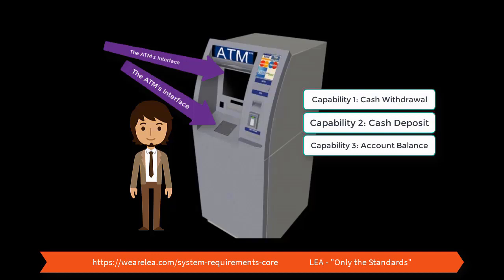When you as the user make your selection on the ATM, you have no interest in how it completes its various processes. Your one and only interest is what processes it does complete. When you make a request for cash, you care that it dispenses the cash. When you request a balance, you care that it outputs the balance.